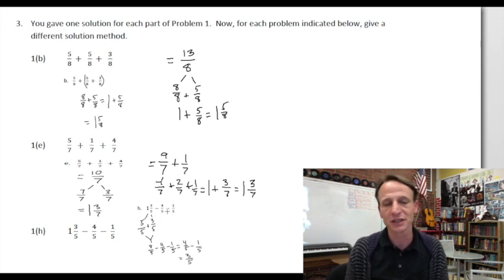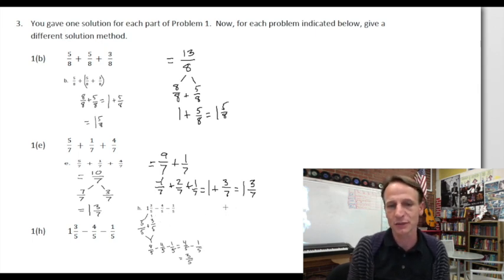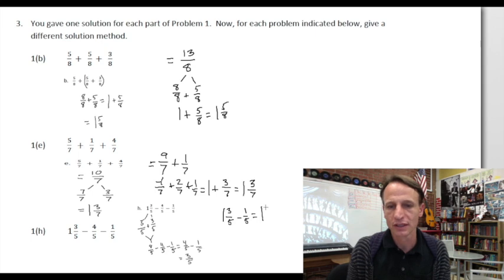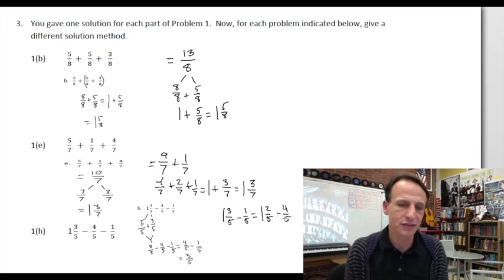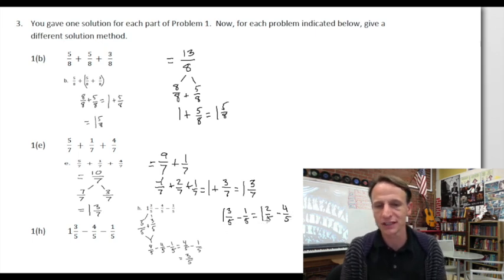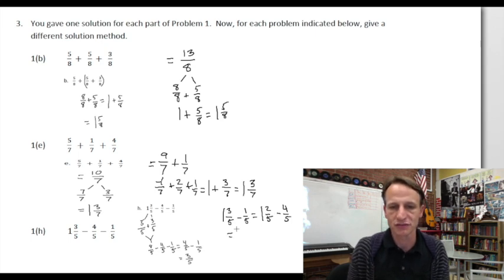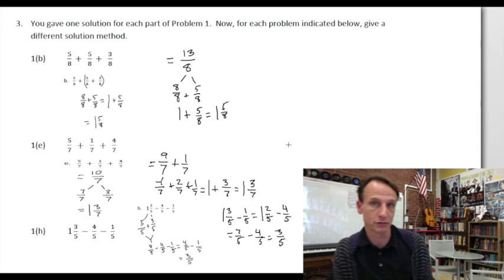For one H, we can actually do this differently. I considered starting with one and three fifths and just subtracting the one fifth out first, which leaves one and two fifths. Then subtract four fifths: one whole is five fifths plus the two fifths, so that's seven fifths, minus four fifths equals three fifths. There we go — a different way!